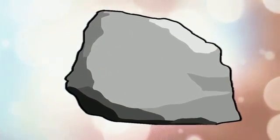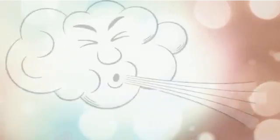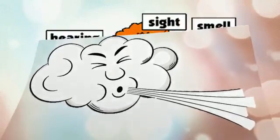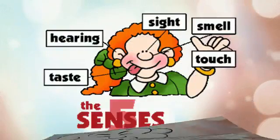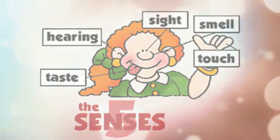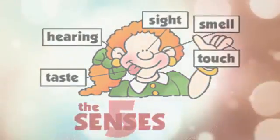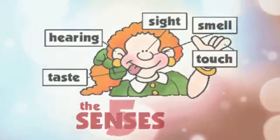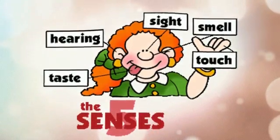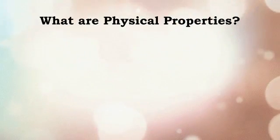A rock is a solid, water is a liquid, and air is a gas. A property is a characteristic that is used to describe matter. A physical property is one that can be measured or observed with the senses without changing the matter into another kind of matter.